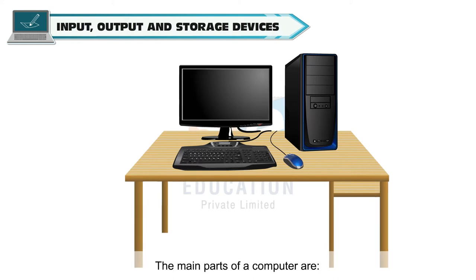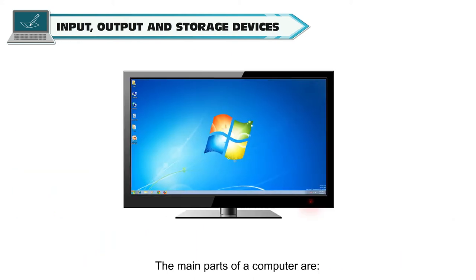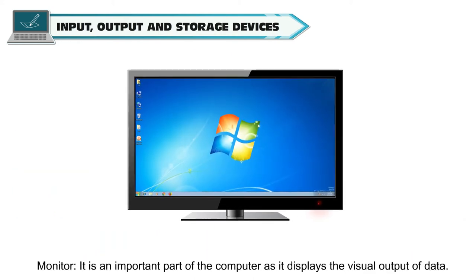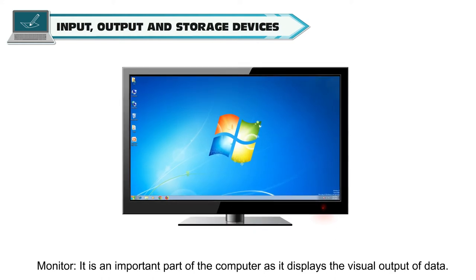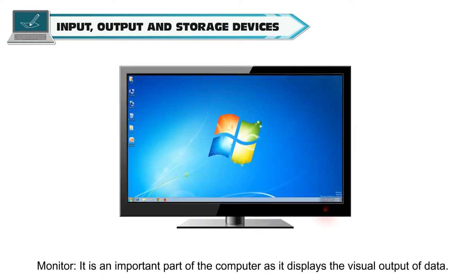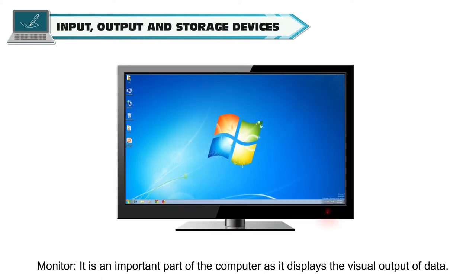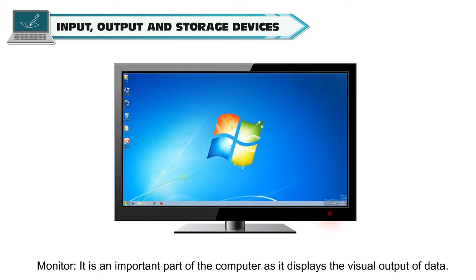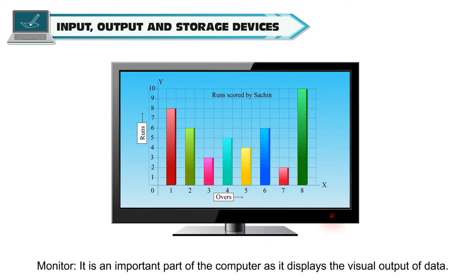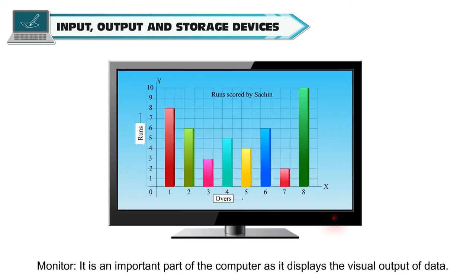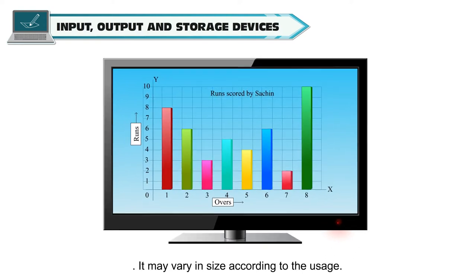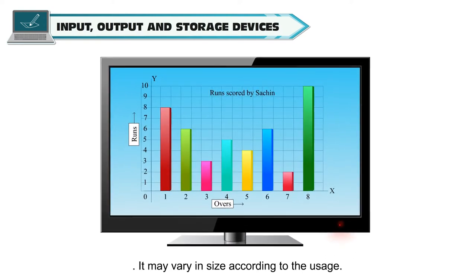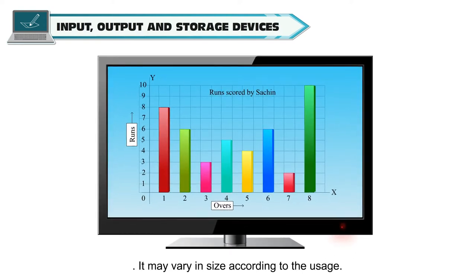The main parts of a computer are: Monitor. It is an important part of the computer as it displays the visual output of data. It may vary in size according to the usage.